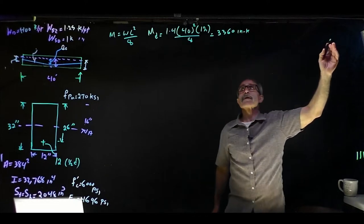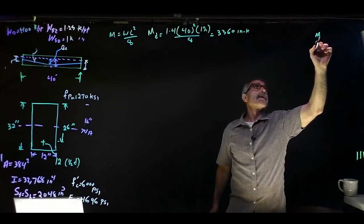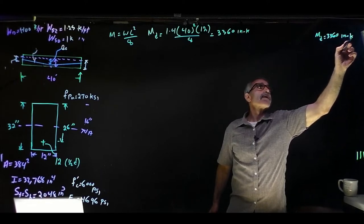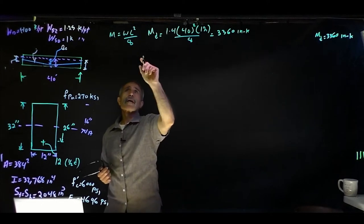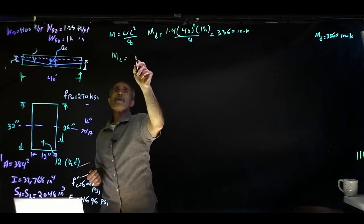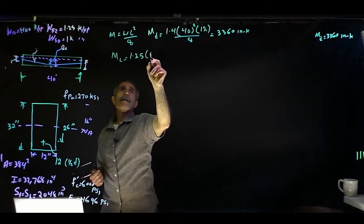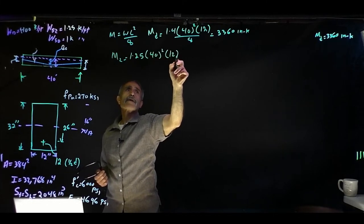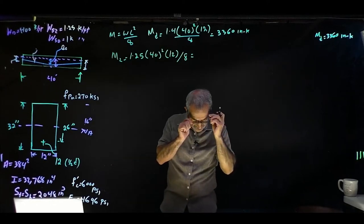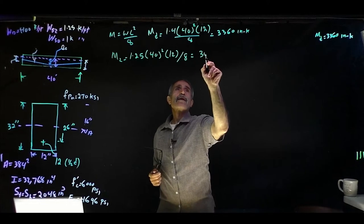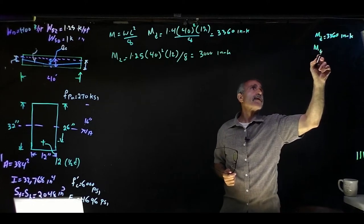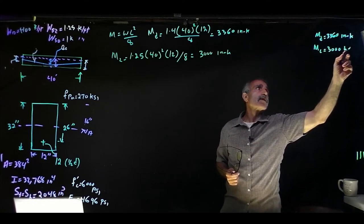Next, I'll calculate the live load moment. The live load is 1.25 kips per foot, times 40 squared, times 12, divided by 8. That comes out to 3,000 kip-inches. So ML = 3,000 kip-inches.